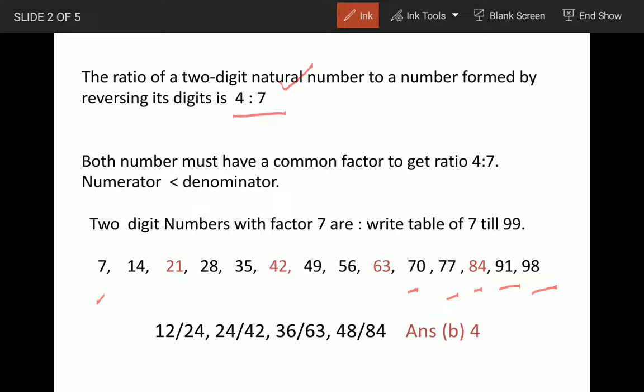Now out of these numbers, we have to identify where, when we reverse the digits, we are getting numerator lesser than denominator. So 21 gives 12, then you get 42 to 24, 63 to 36, 84 to 48.